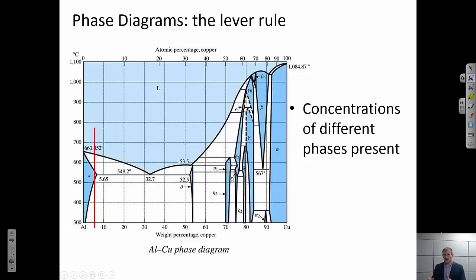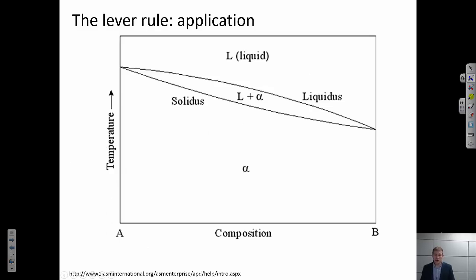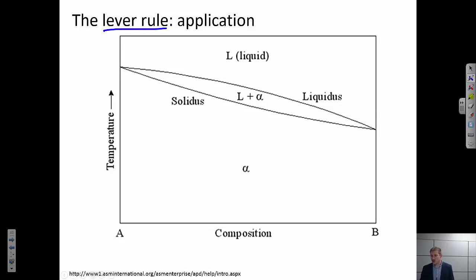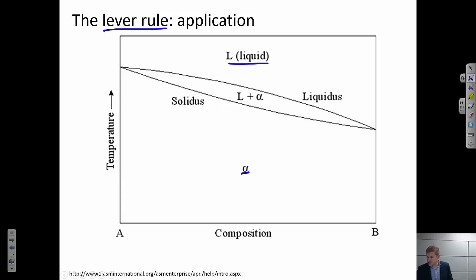I always like to start off with a fairly complicated phase diagram just to remind you that anything we go through is perfectly applicable to a more complicated system. That said, we're going to start with a simpler system — a binary isomorphous phase diagram. We use the lever rule when we want to know the concentration of the different phases present, such as how much solid alpha and how much liquid there is.